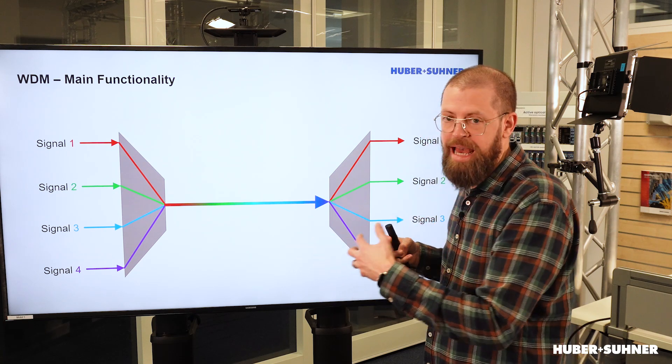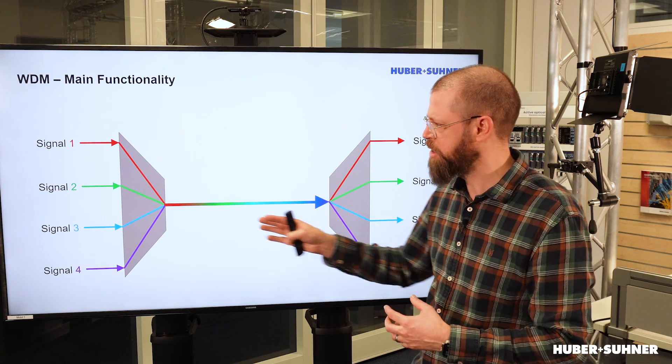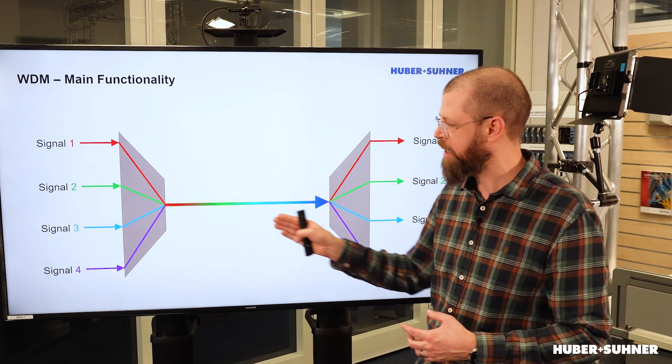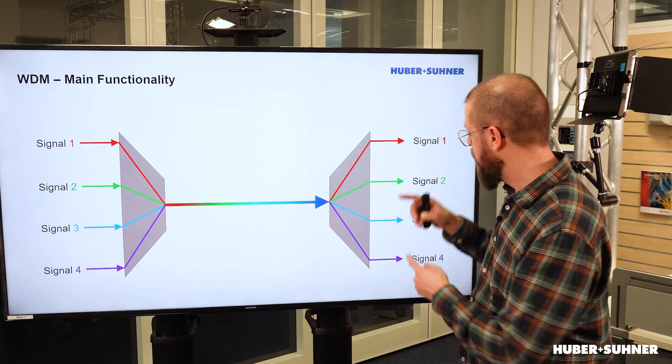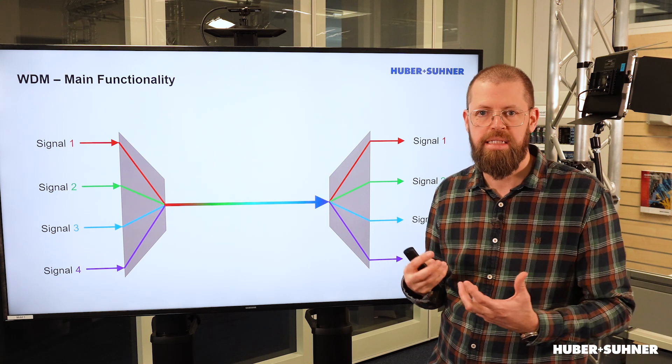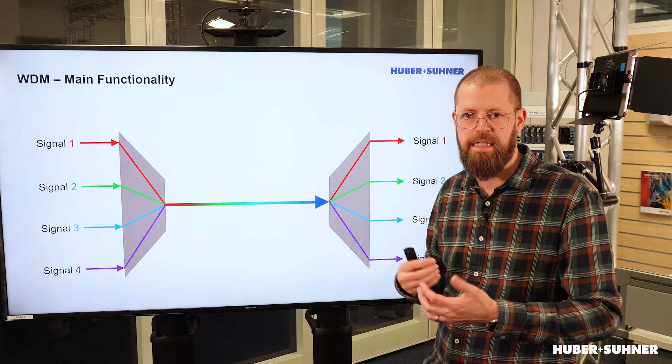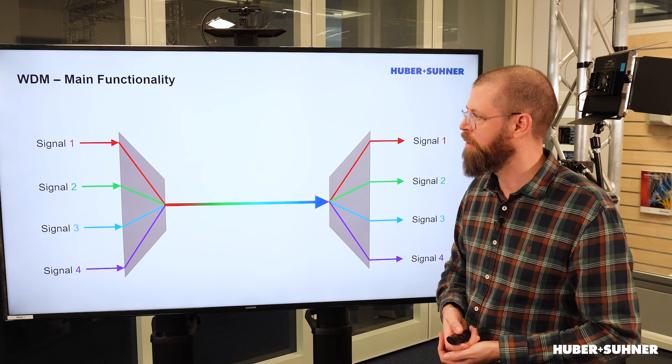But we will, of course, have some optical power loss. But that's due to the insertion loss of the multiplexers and the attenuation of the fiber cable. But this isn't a signal splitting, and that's why we're not losing or dividing the optical power.